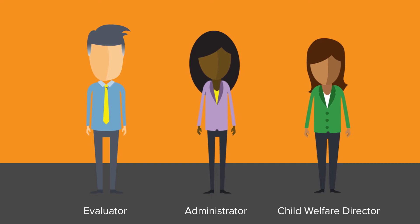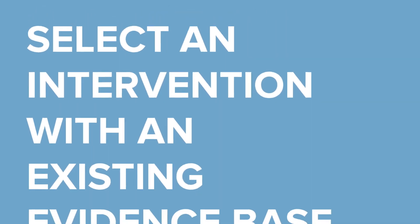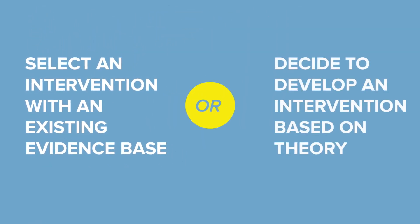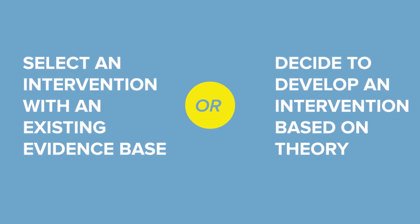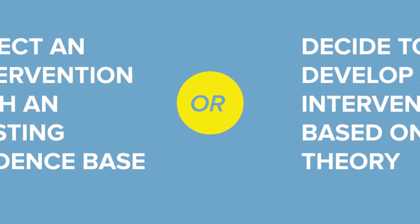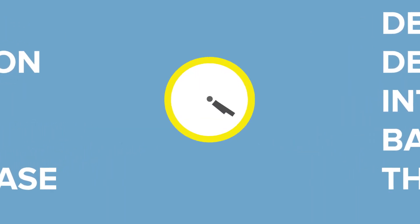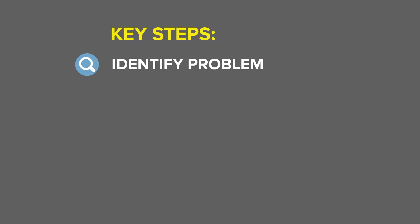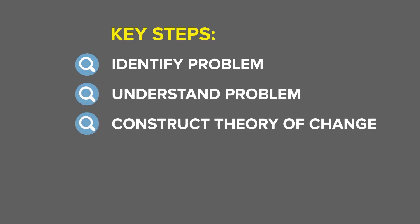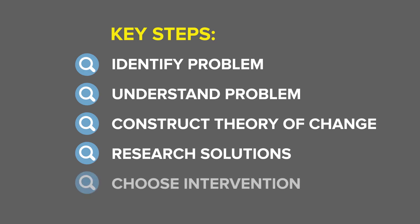The purpose of Identify and Explore is to either select an intervention with an existing evidence base, or to decide to develop an intervention based on theory and practice knowledge that addresses an identified problem. This is tricky — there's a tendency to rush through this process, especially in eagerness to fix problems. The framework requires that we slow down and follow some deliberate steps: identify the problem, understand the problem, develop a theory of change, research solutions, and choose a solution.